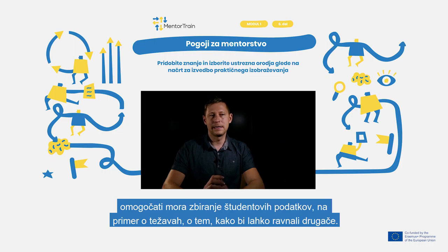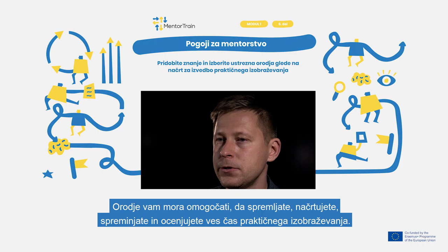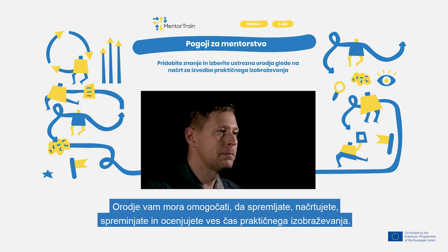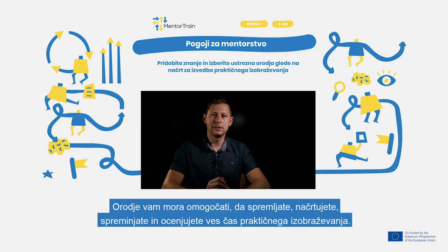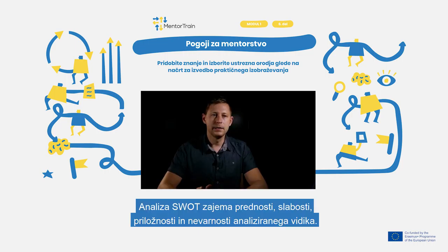For example, problems could be handled differently. In conclusion, with the tool you must be able to follow, plan, change, and evaluate the apprenticeship. For example, we can use SWOT for analyzing the mentorship plan. In a SWOT analysis we find the strengths, weaknesses, opportunities, and threats.